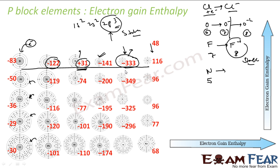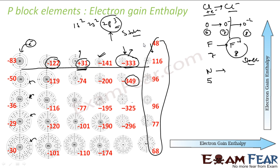For halogens: chlorine emits more energy when it becomes Cl⁻, bromine emits a little less, and iodine even less. Noble gases have all positive electron gain enthalpy values — they are stable and don't want extra electrons. If you give them an extra electron, they become unstable. They are happy with their stable configuration.